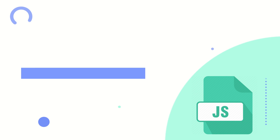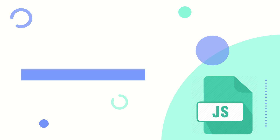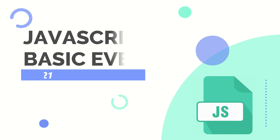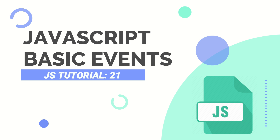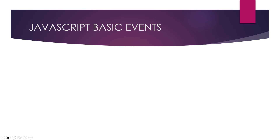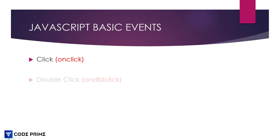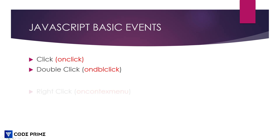Hello everyone, this is JavaScript beginner tutorial series number 21. In this part we are going to learn about JavaScript basic types of events. There are a lot of basic event types, so I'm just going to highlight some of the popular ones which are basics. They also have some advanced events we will learn in later videos. The first one I'm going to cover is the click event, and the next one is double click.